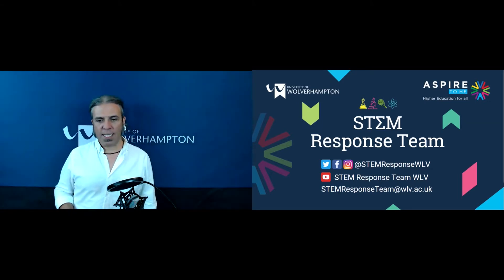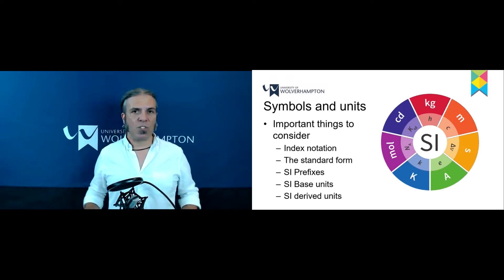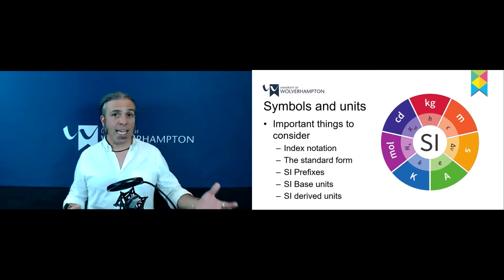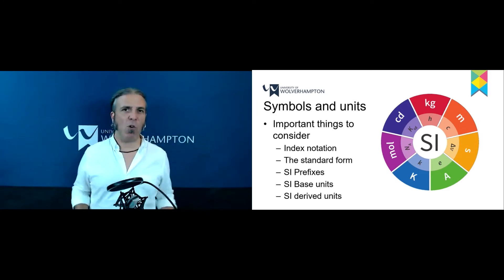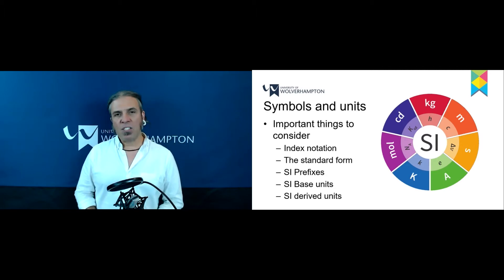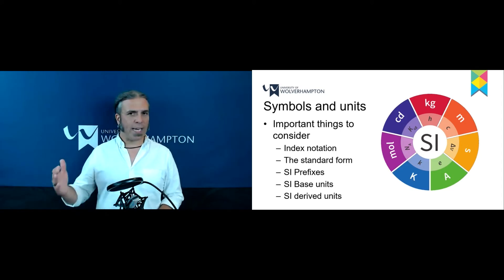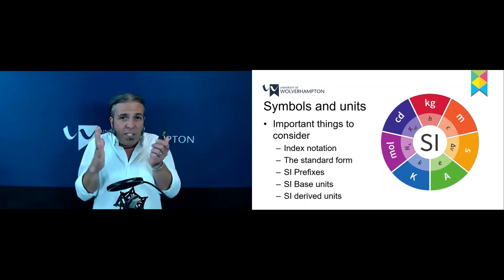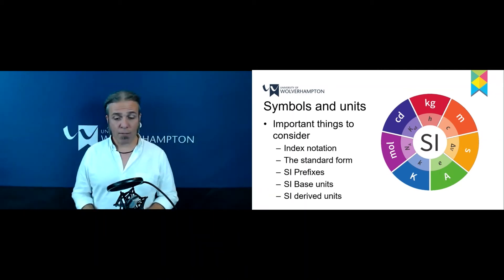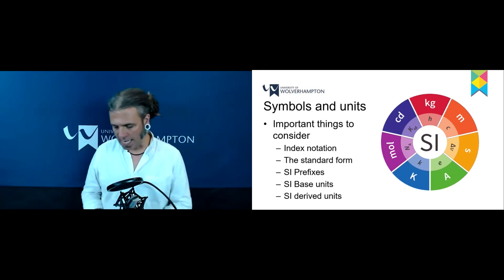So let's have a quick introduction to symbols and units. There are some important things we need to consider in your studies in physics, whether you're doing a BTEC in applied sciences or A-level physics — we're going to need these basics. First, I'm going to introduce you to index notation. We're going to look at standard form, which is really important because some numbers in physics can be very big or very small. We're also going to look at standard prefixes, standard base units, and standard derived units.